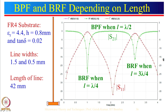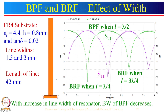The S11 response shows that when nothing is going to the output everything reflects back, and when everything goes to the output nothing reflects back. For this band pass filter configuration the bandwidth obtained is very large, and we may need smaller bandwidth. To get smaller bandwidth, we look at the effect of width: in the next example, instead of 0.5 mm width, we use 3 mm width. When the width is increased, the bandwidth of the band pass filter reduces — by increasing this width we can decrease the bandwidth.